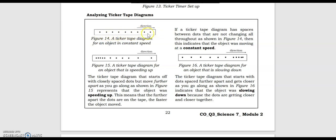For constant speed, as you can see, the dots are spaced equally. For Figure 15, the object here is speeding up. As you can see, the dots are close together at the beginning, but later on they move farther apart from each other — the object suddenly sped up. So this is the ticker tape diagram when an object is speeding up.